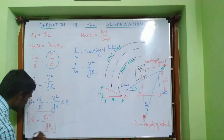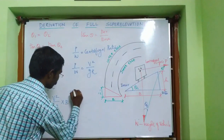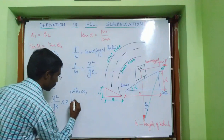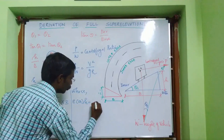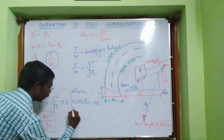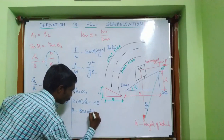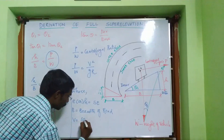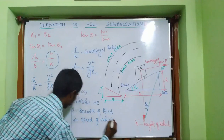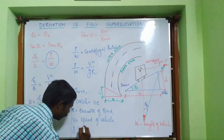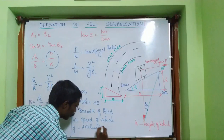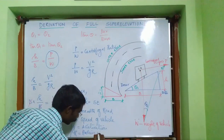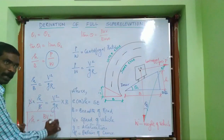This is the derivation of the full super elevation formula. In the formula h = bv²/gr: h denotes full super elevation (also commonly denoted as e), b denotes the breadth of the road, v denotes the speed of the vehicle, g denotes acceleration due to gravity, and r denotes the radius of the curve.